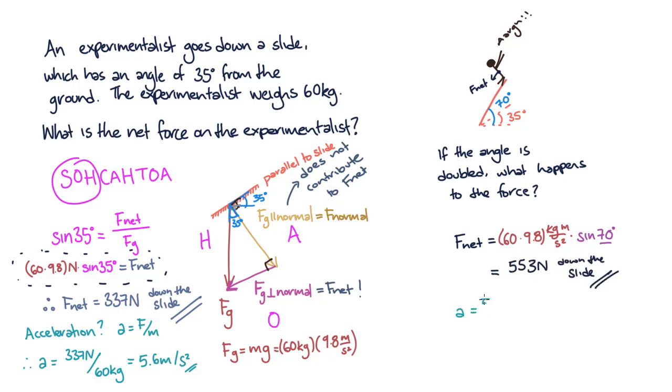As before, we can use our equation for acceleration to find that the experimentalist will accelerate at 9.2 meters per second squared. While this is bigger, it's not twice as big as our previous answer. The reason it's not twice as big is because when theta doubles, sine of theta doesn't double. In other words, sine isn't a linear function.